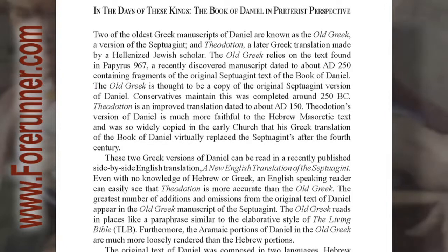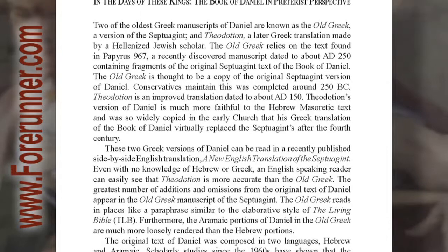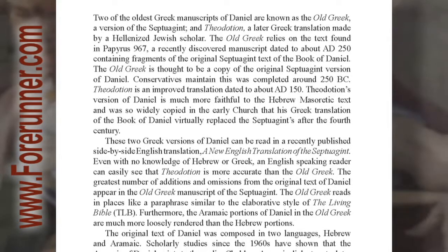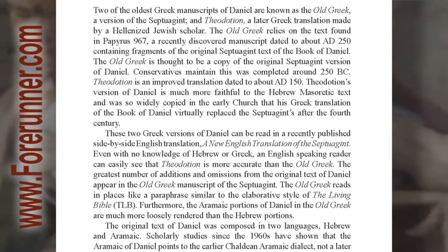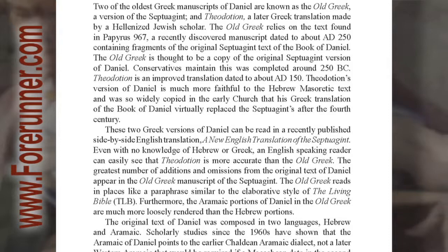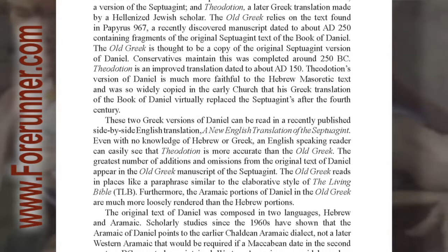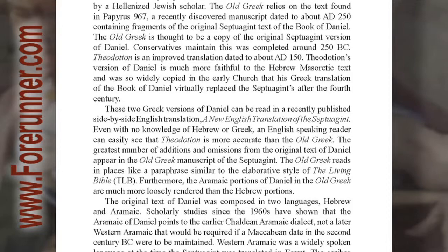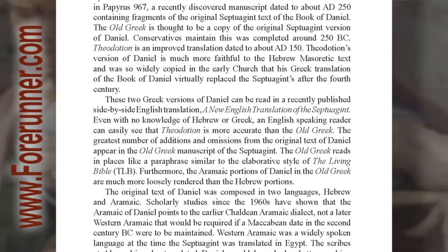Two of the oldest Greek manuscripts of Daniel are known as the Old Greek, a version of the Septuagint, and Theodotion, a later Greek translation made by a Hellenized Jewish scholar. The Old Greek relies on the text found in Papyrus 967, a recently discovered manuscript dated to about AD 250, containing fragments of the original Septuagint text of the book of Daniel. The Old Greek is thought to be a copy of the original Septuagint version of Daniel.